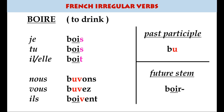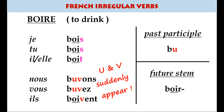Boire means to drink. Je bois, tu bois, il boit — then the u appears out of nowhere: nous buvons, vous buvez — and then it goes back to the oi sound but the v stays: ils boivent. We've now come into verbs that have really started to diverge from the regular patterns.